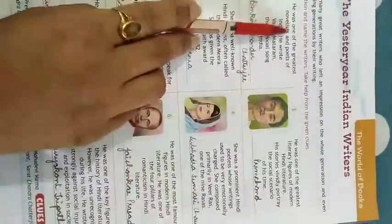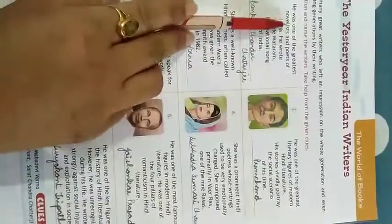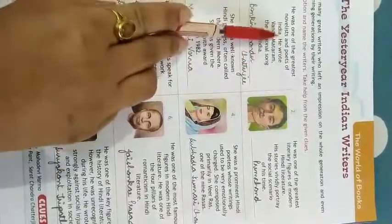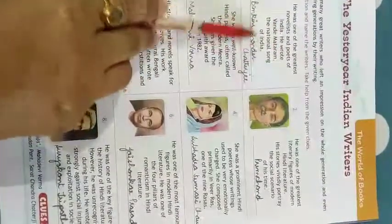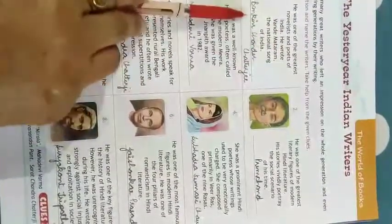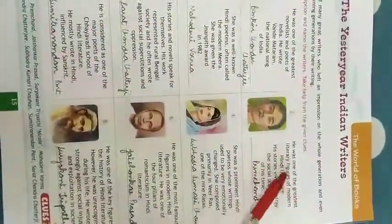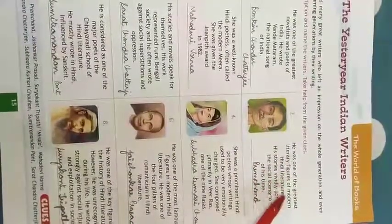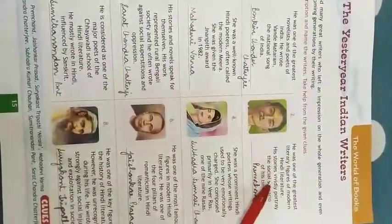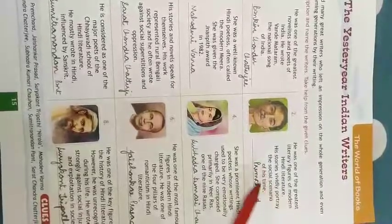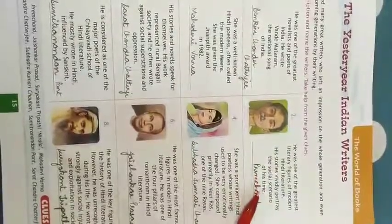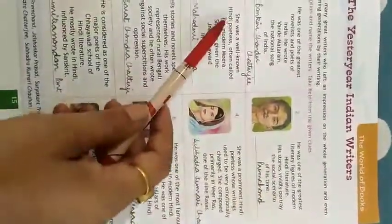First one: he was one of the greatest novelists and poets of India, who wrote Vande Mataram, the national song of India — he was Bankim Chandra Chatterjee. Next, he was one of the greatest literary figures of modern Hindi literature; his stories vividly portray the social scenario of his time — he is Premchand.